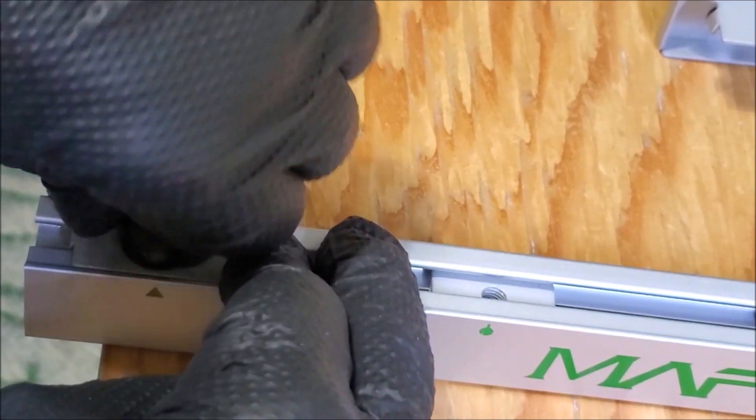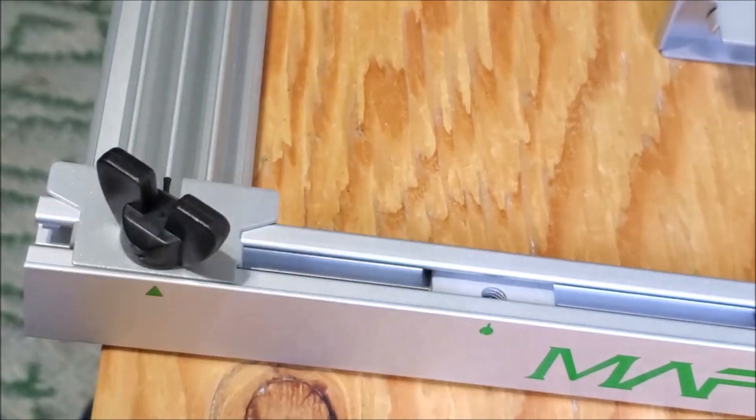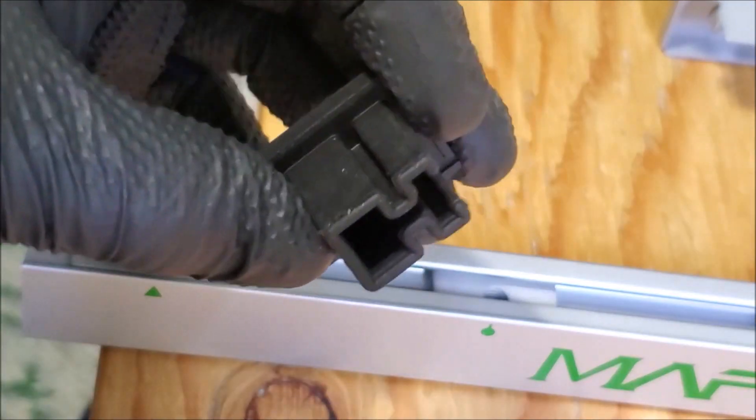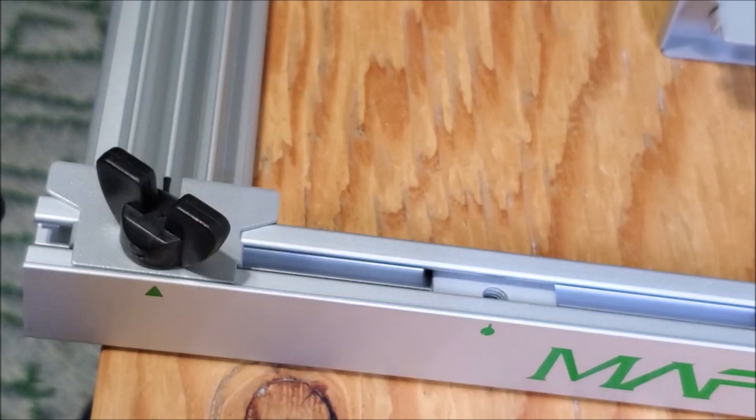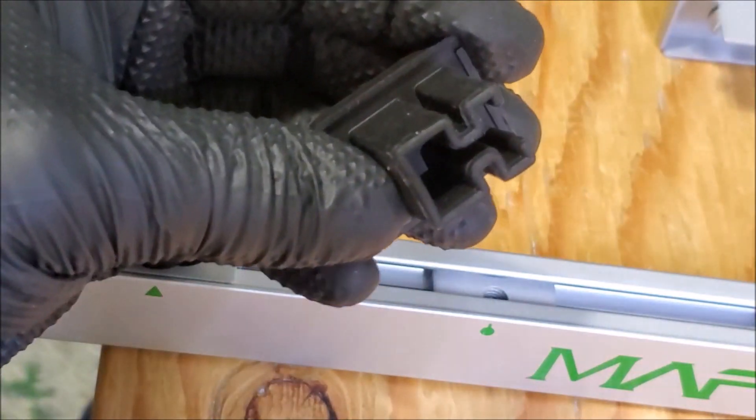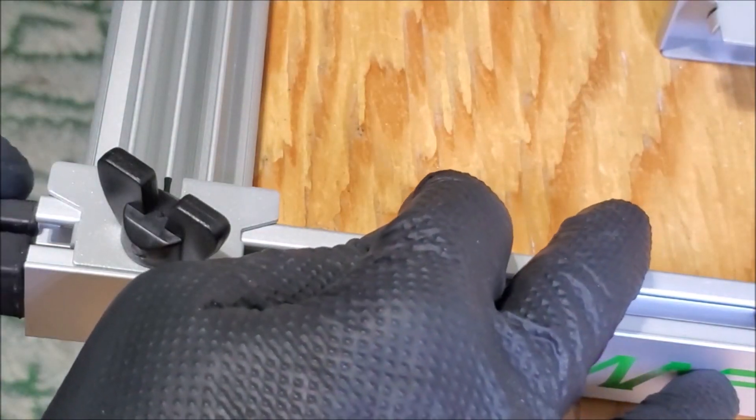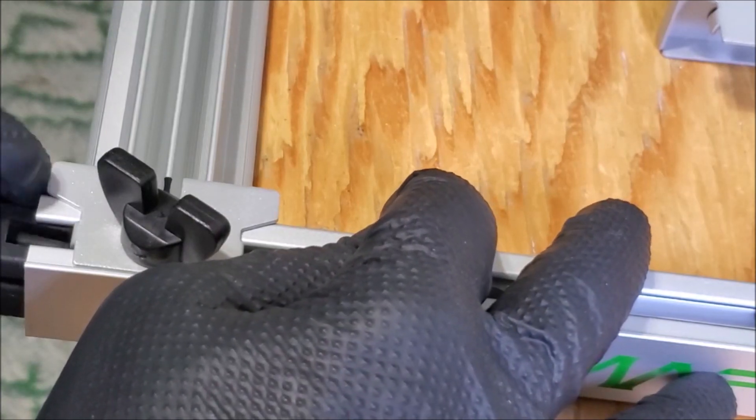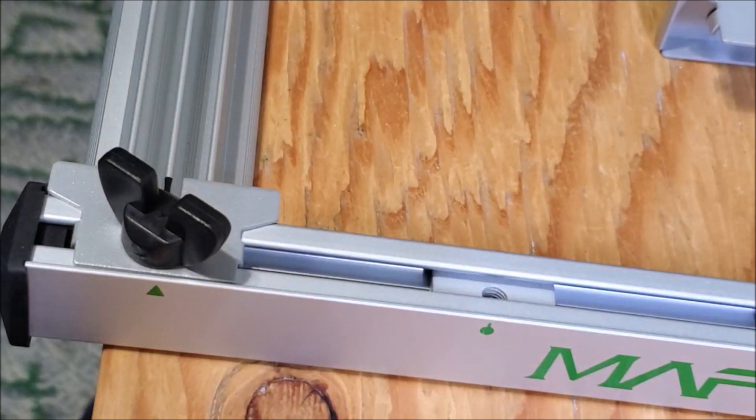Then it comes with these end caps, and they only fit in one way. As you can see, they're made to fit the rail here, and you just slide them in. So you got a nice little end there, as opposed to a metal end.